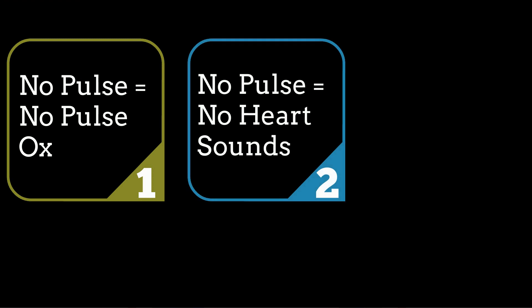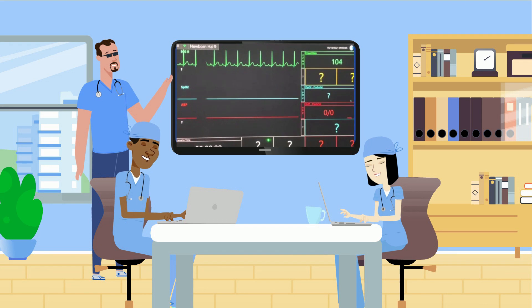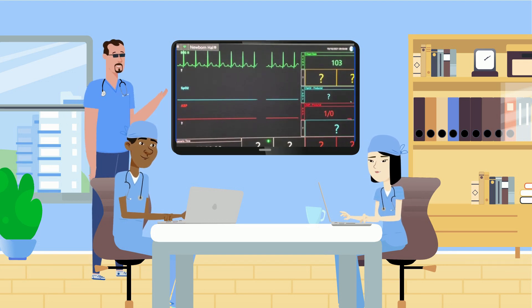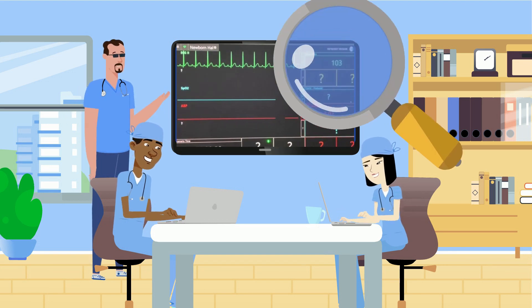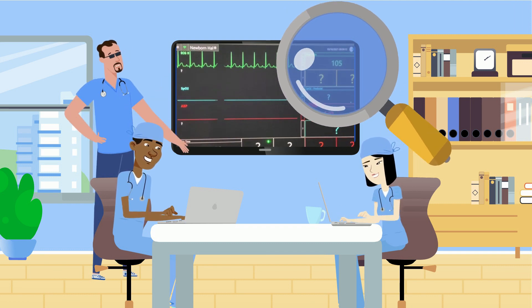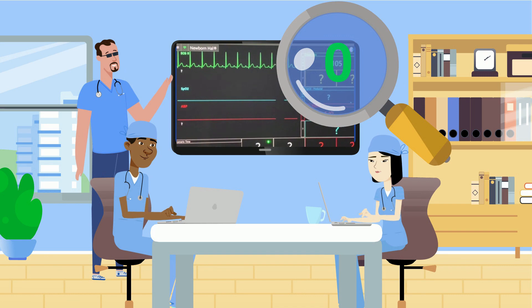No pulse — no heart sounds will be heard on auscultation. No pulse — there will be no waveform on arterial monitoring if you are lucky enough to have that when it happens. No pulse means no heartbeat that is actually circulating blood around the body. So on closer inspection, that number associated with the ECG tracing is actually zero, no matter what it says on the monitor.